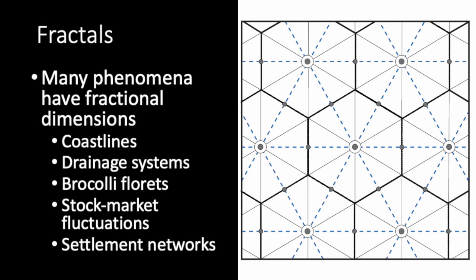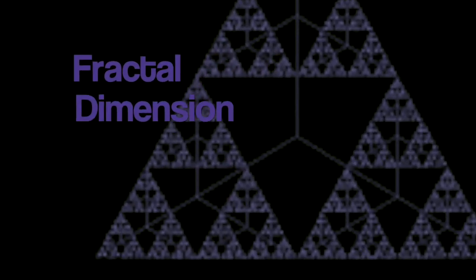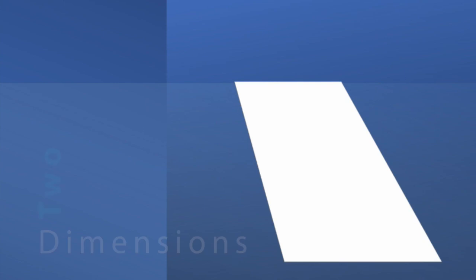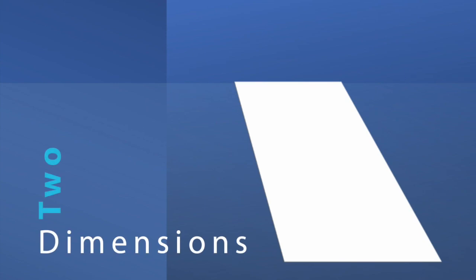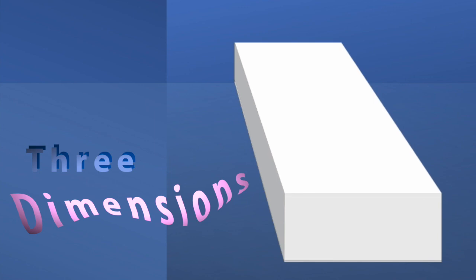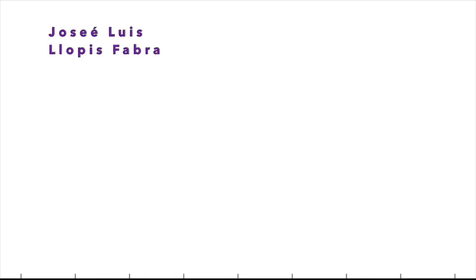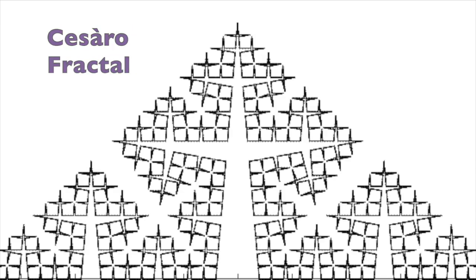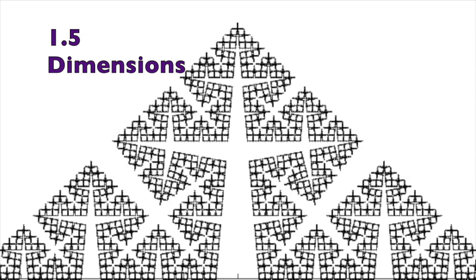We can also find fractals in human settlement patterns. These are just some of the ways in which fractals can be relevant to archaeology. When we think of things in our environment, we tend to think in terms of two dimensions, like an infinitely thin sheet of paper. And when that paper has thickness or turns into a board, it has a third dimension. But what if I told you that this rather spiky looking shape, known as a Cesaro fractal, has 1.5 dimensions?